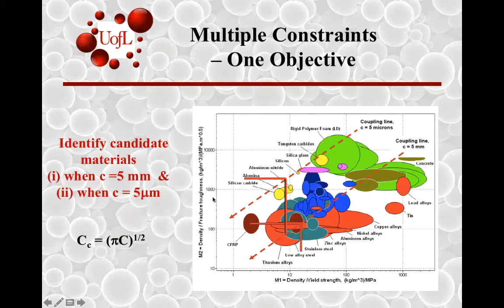So when c is five micrometers, you have c sub c, the coupling constant computed and given by this particular line. And when the crack length increases to five millimeters, then the coupling constant can be used to generate a coupling line. And in this case, you have the second coupling line.